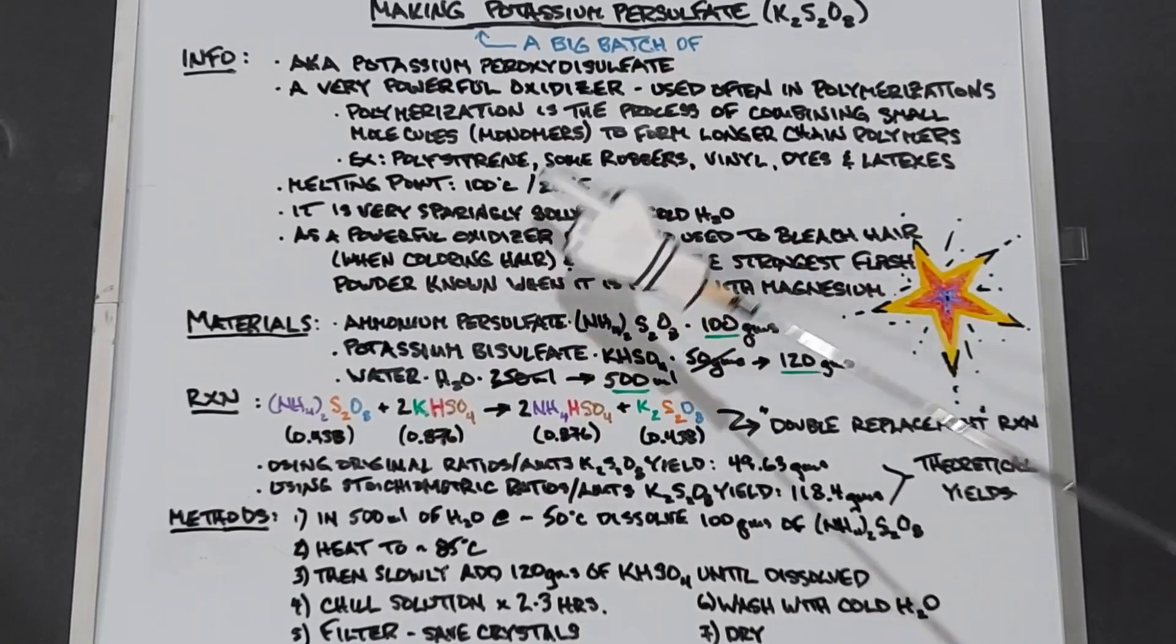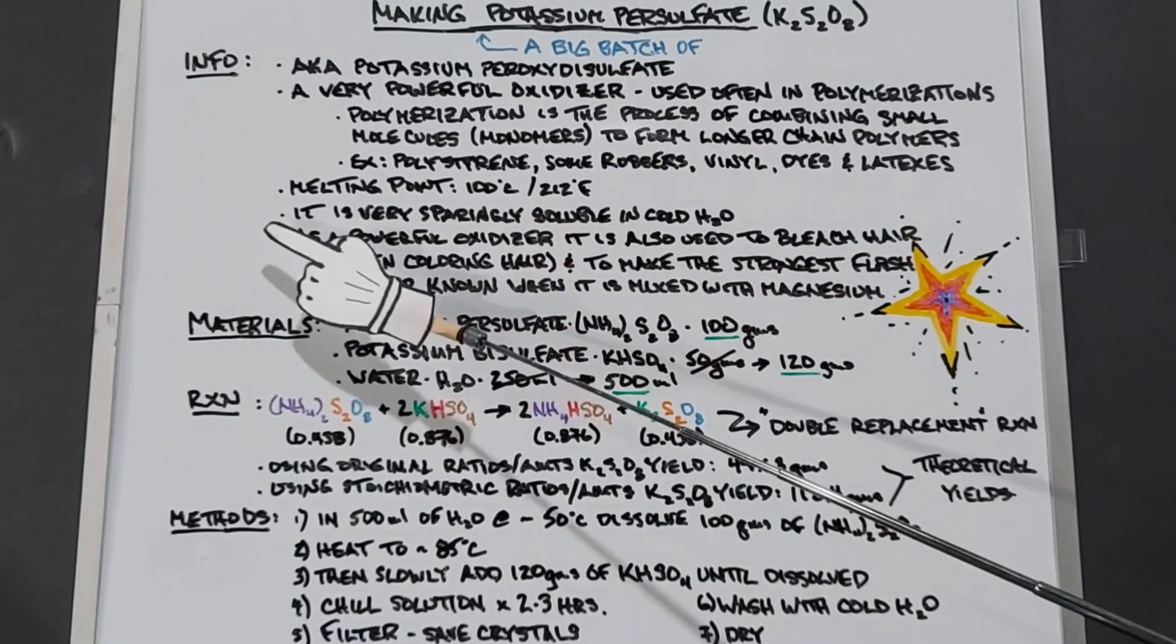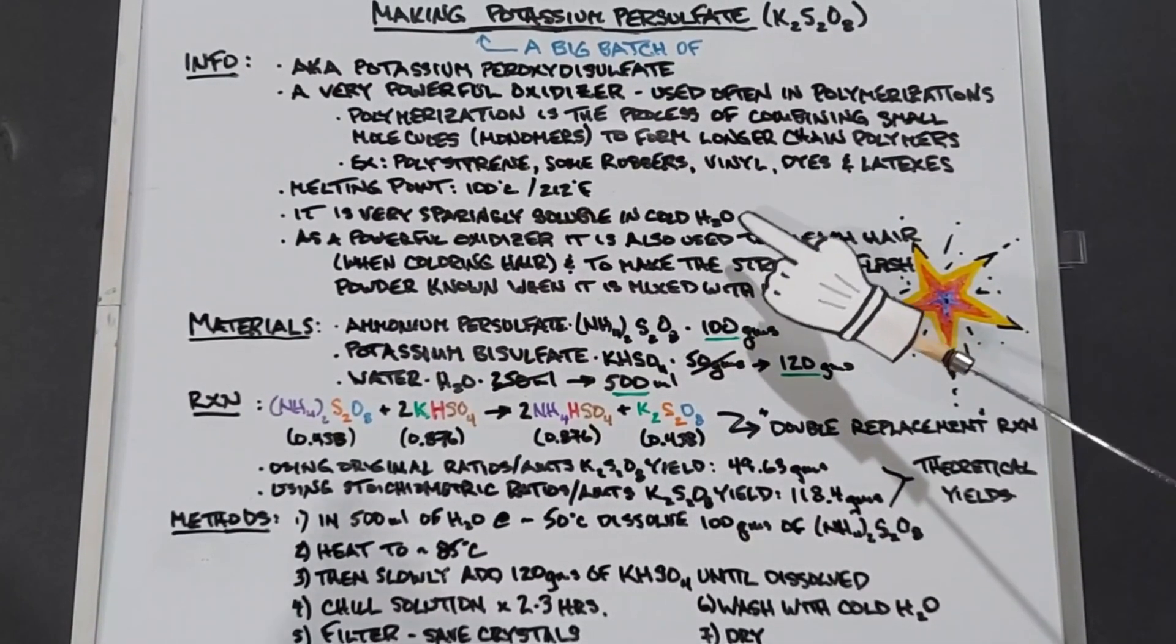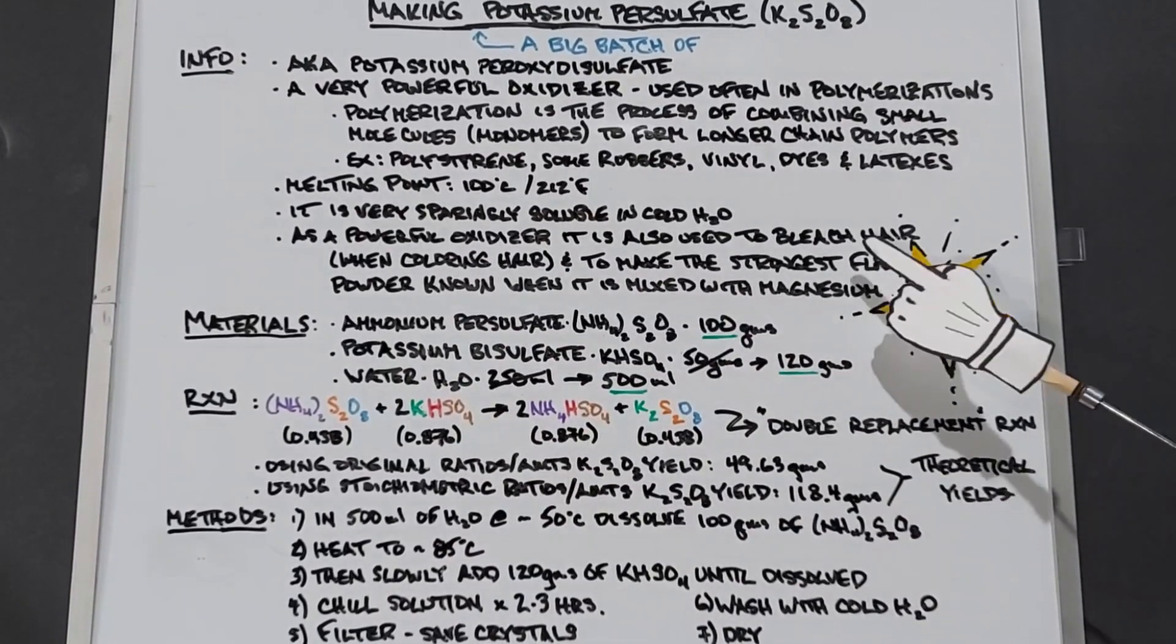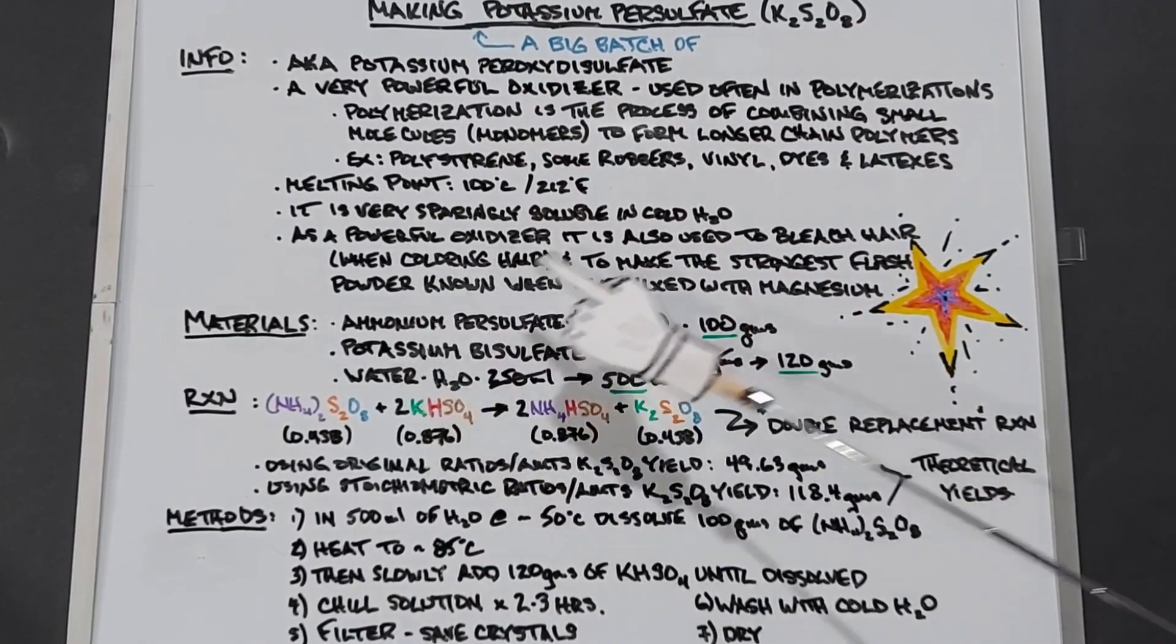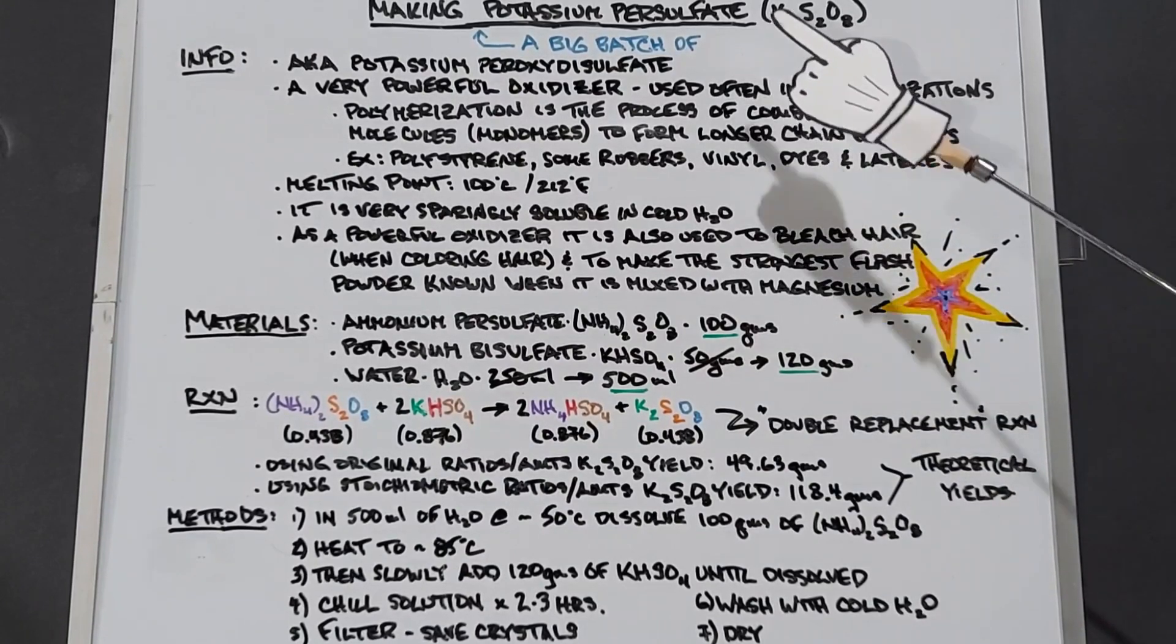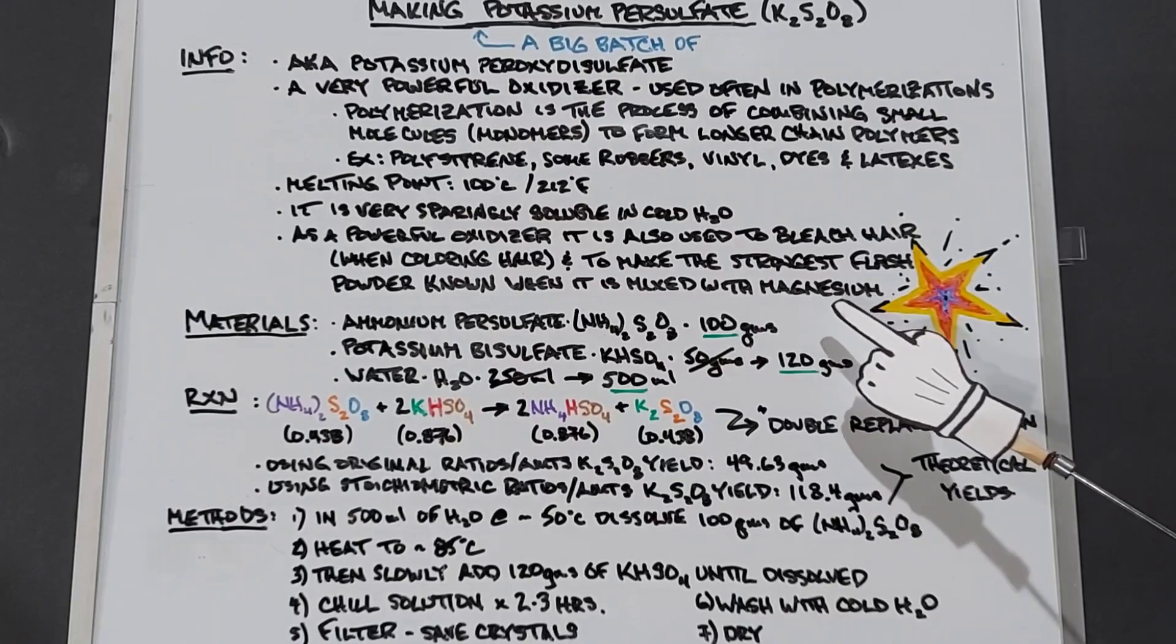At this point also is when the eight oxygens in the potassium persulfate are released. Potassium persulfate is very sparingly soluble in cold water, and that will come in very handy in this experiment. A powerful oxidizer, it is also used to bleach hair when you're coloring hair, and to make the strongest flash powder known in chemistry when it's mixed with magnesium. So the end result of making a big batch of this is to mix it with magnesium and make a powerful flash powder.